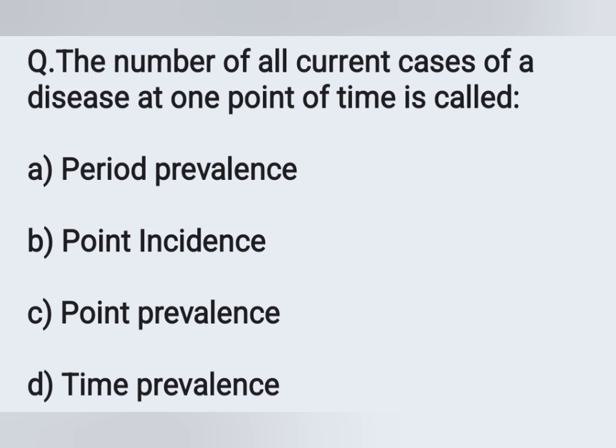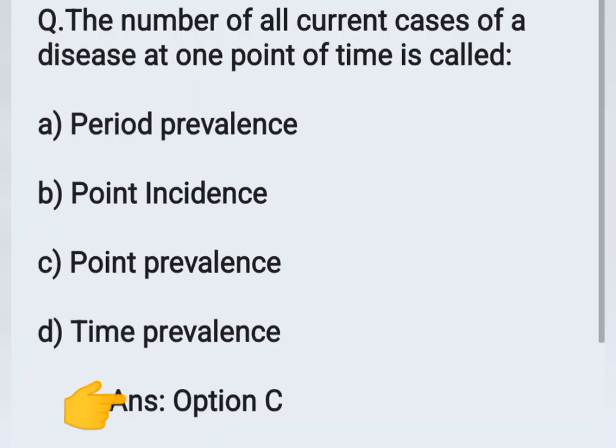The next question: The number of all current cases of a disease at one point of time is called — Option A: period prevalence, Option B: point incidence, Option C: point prevalence, Option D: time prevalence. The number of all current or recent cases of a disease at one particular point in time is called point prevalence. Option C is the correct answer.